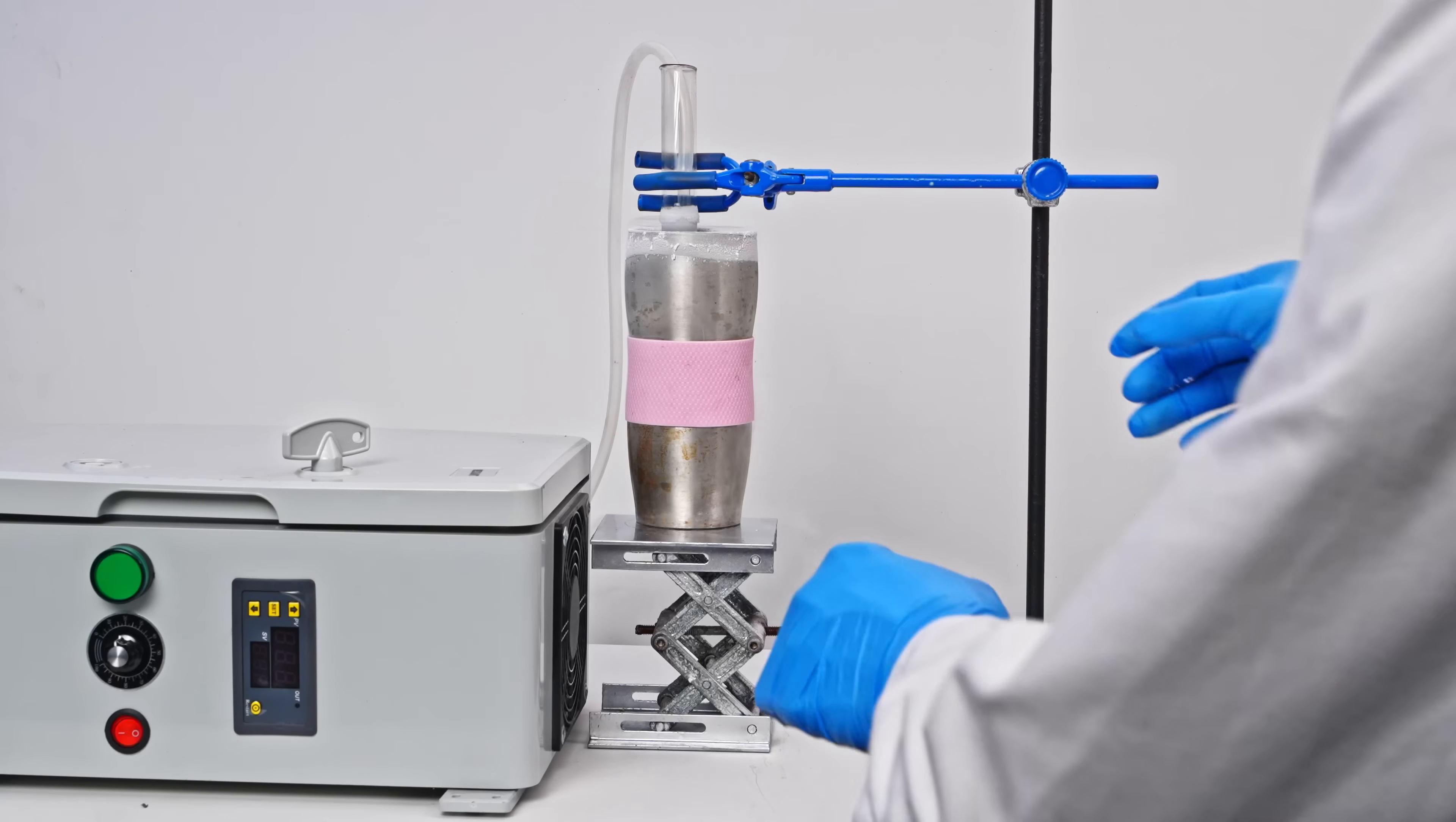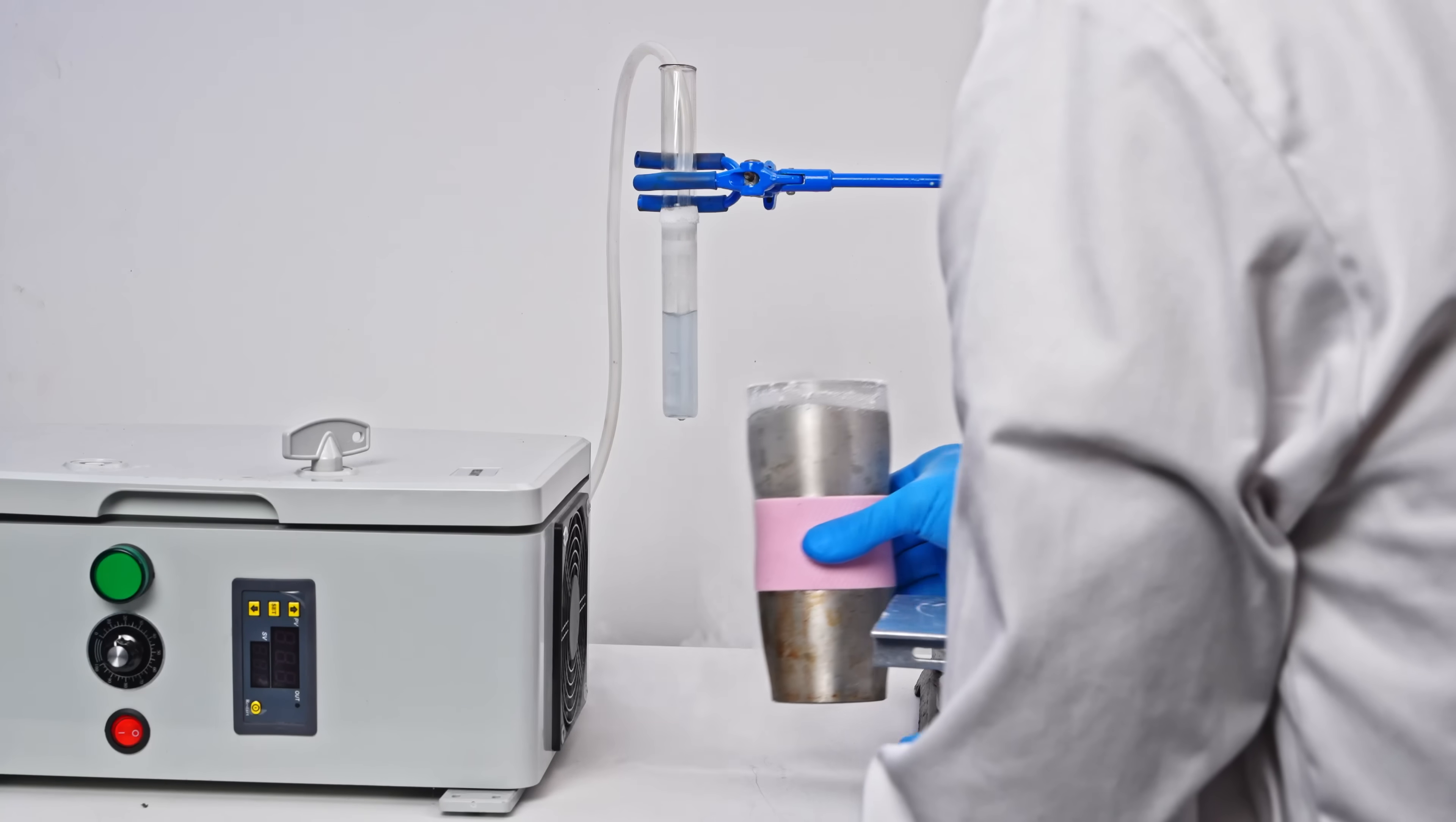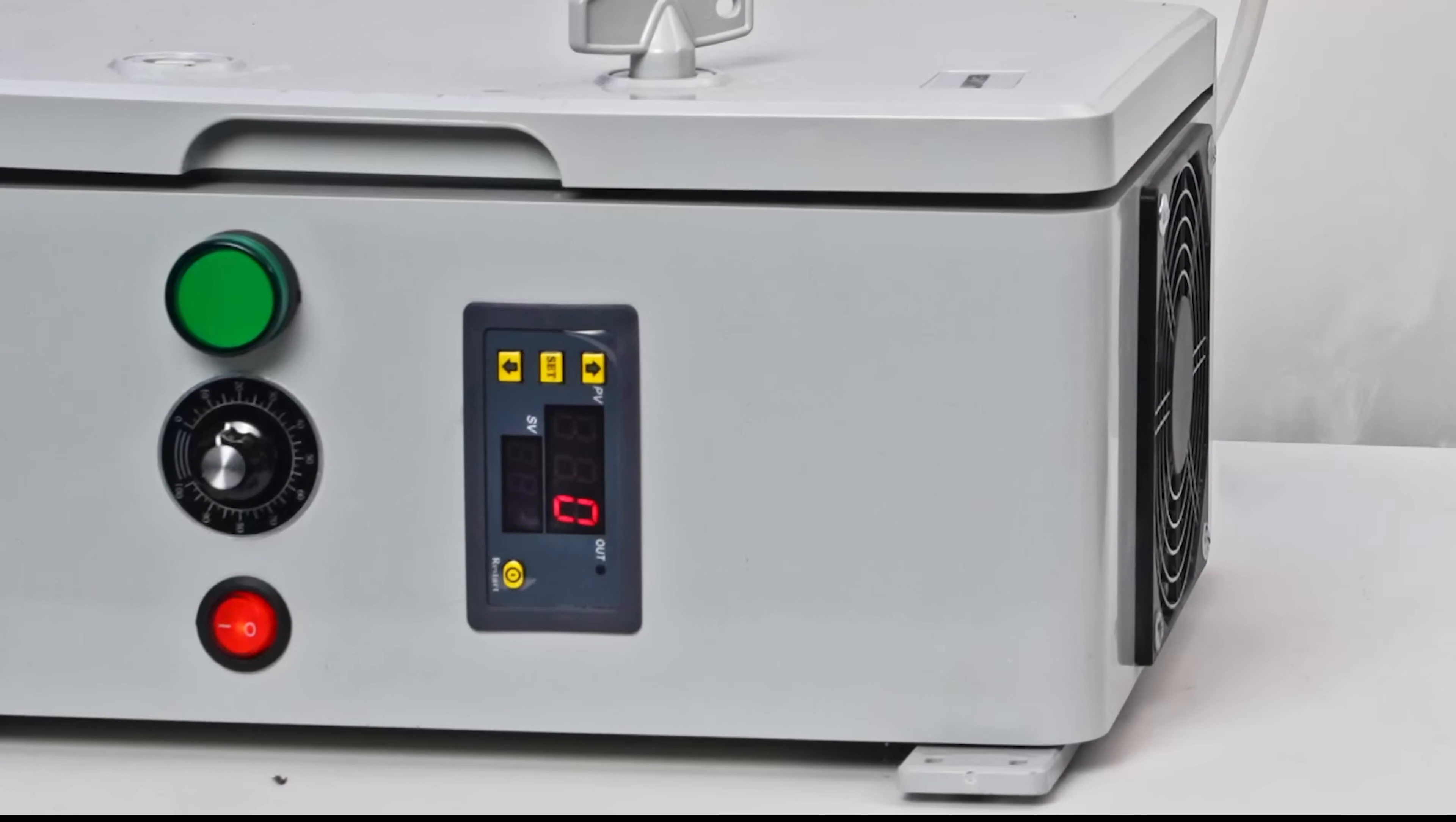Right now the ozone generator is off, and I've passed oxygen through it, condensing it in a test tube. You can see the pale blue color of liquid oxygen. Now I'll turn on the ozone generator, and you'll notice how the liquid oxygen's color becomes more intense.